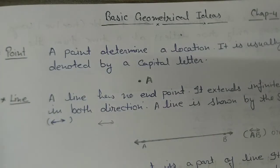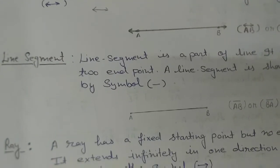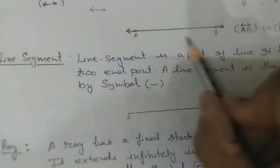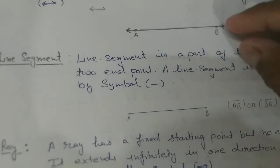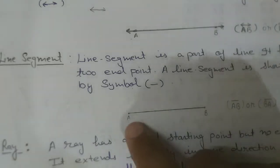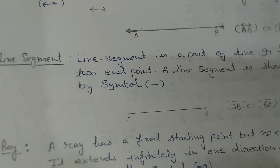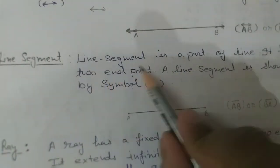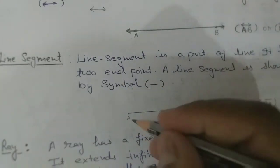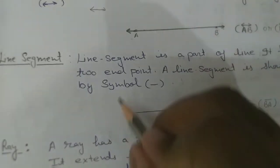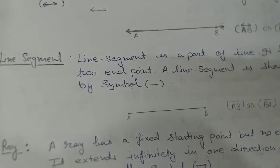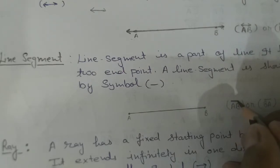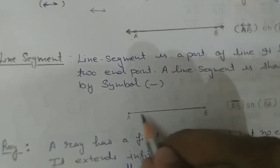Now the next topic is line segment. A line segment is a part of a line; it has two end points. A line has no end point, but if we cut it, that part is a line segment — because segment means part, so line segment means a part of a line. It has two end points. A line segment is shown by a bar symbol above AB, and AB and BA are both equal.